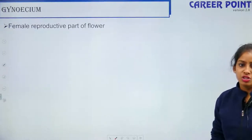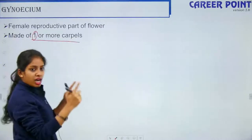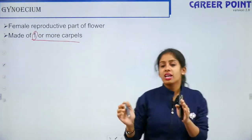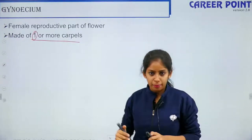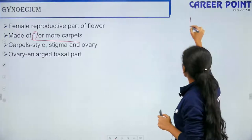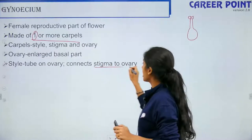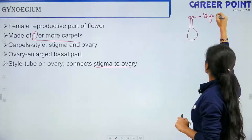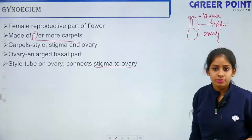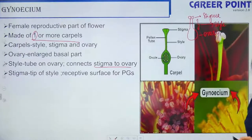Now talking about gynoecium — the female reproductive part of the flower. Gynoecium is made up of one or more carpels. A carpel consists of stigma, style, and ovary. The ovary is the enlarged basal part; the style is the tube on the ovary connecting stigma to ovary; and the stigma is the tip of the style — the receptive surface for pollen grains.